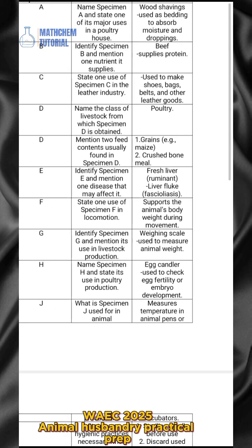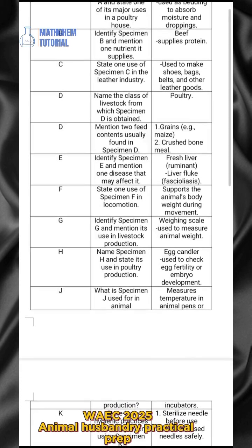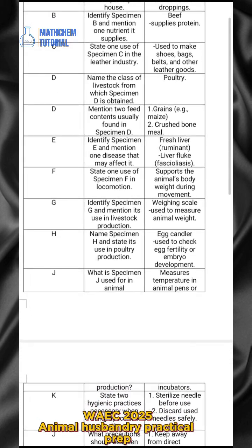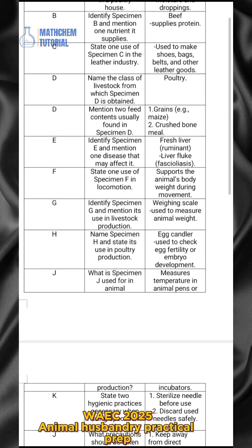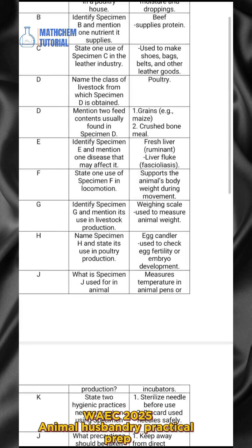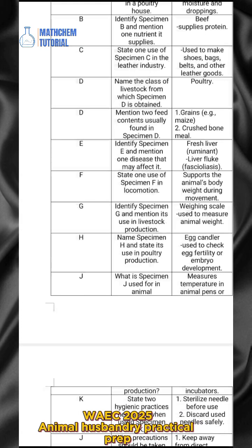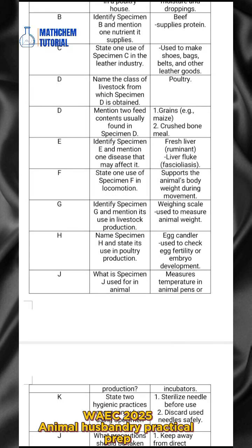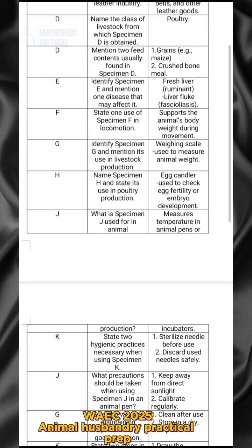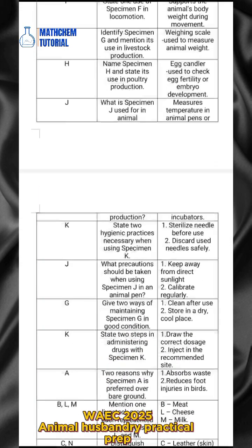For specimen G, identify it and mention its use in livestock production. Specimen G is a weighing scale and it is used to measure animal weight. For specimen H, name it and state its use in poultry production. Specimen H is an egg candler and it is used to check egg fertility or embryo development. Specimen G is also used to measure temperature in animal pens or incubators.